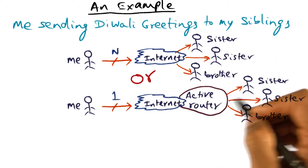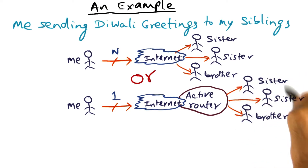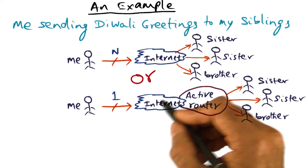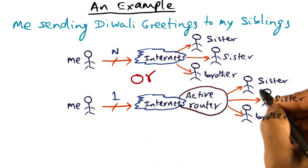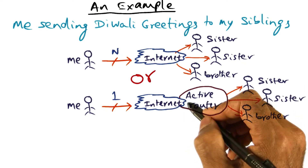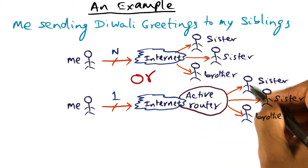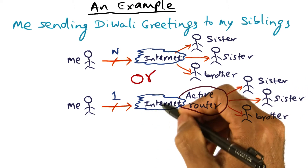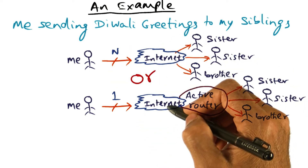A nicer approach would be, given that all my siblings are clustered in one corner of the globe, it would be nice if I could send just one message, it traverses the internet, gets close to the destination of where my siblings are, and the router at this end demultiplexes my message and sends it to all my siblings. Obviously, the second method is more frugal in terms of using network resources.